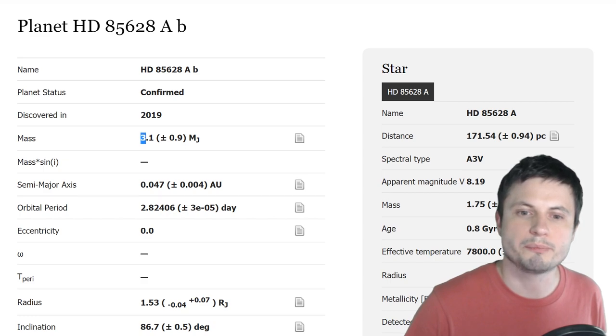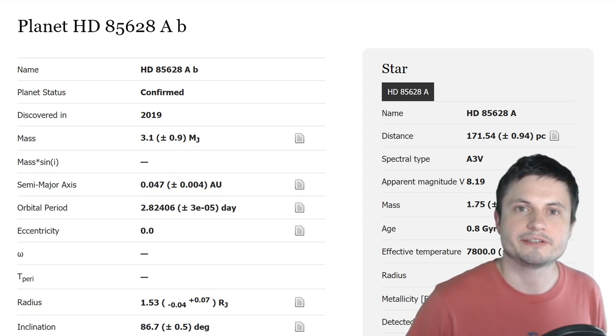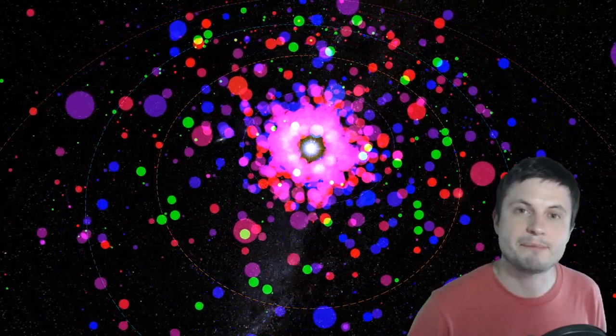And so now we know that it's about 3.1 masses of Jupiter, its radius is about 1.5 masses of Jupiter, and its orbital period and also its distance from the parent star are all here. So it's essentially what you would call a hot Jupiter. And these are exactly the types of exoplanets that Mascara project is aiming to find.